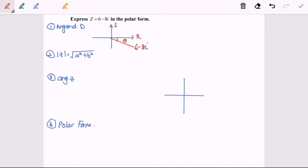The second step is to determine the value of modulus of z. So the modulus of z will be equal to 36 plus 64. So the modulus of z will be equal to 10.